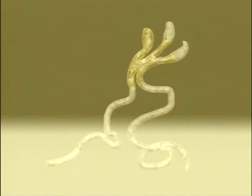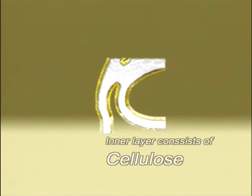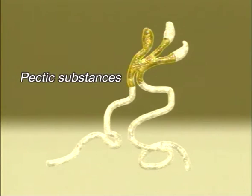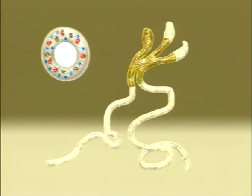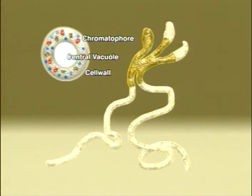The filament is weak, thin, and inelastic. It consists of an inner layer of cellulose and an outer layer of pectic substances. Inside the cell wall, there is a layer of cytoplasm containing cell organelles.